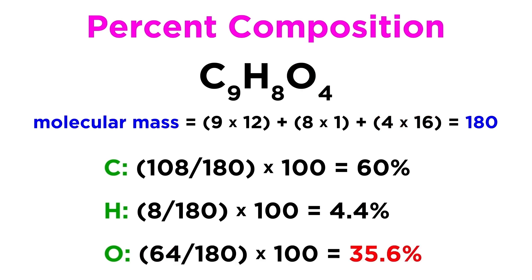64 over 180 times 100 gives us 35.6% for oxygen. This is the percent composition of aspirin, and the three numbers do add up to 100%, so we know we did this correctly.